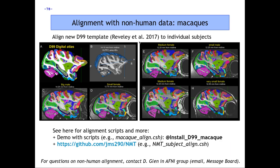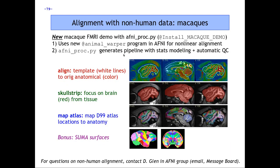Another non-human data example demonstrates outputs from @Animal_Warper, a more modern form of the project. Similarly to @SS_warper, this program produces automatic quality control images and even surfaces to check alignment quality. You can include both a template and an atlas, such as the NMT template and the D99 atlas, highlighting alignment quality, skull stripping ability, and atlas region mapping. Daniel Glen has worked extensively on this and is the main contact. There is also a demo using @SS_warper with afni_proc.py to analyze task fMRI data.